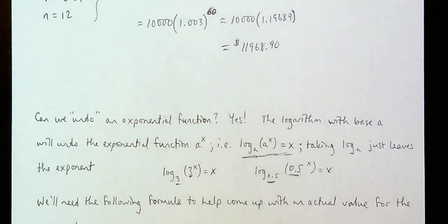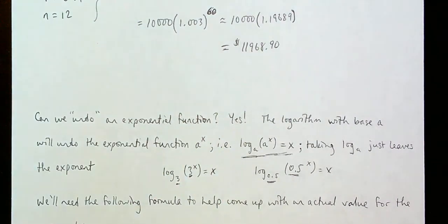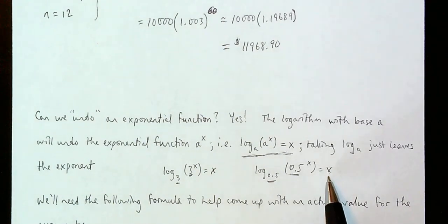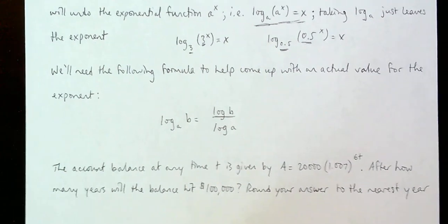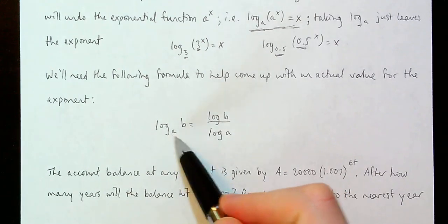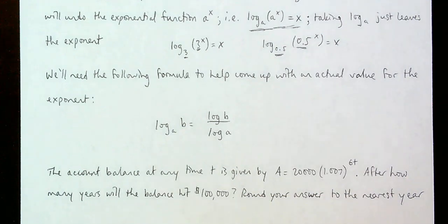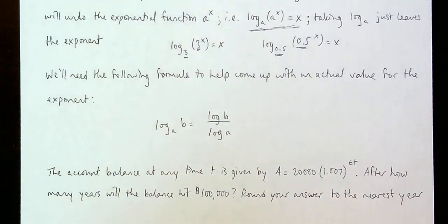That tells us we can undo the exponential. But then we're left with the logarithm of some number, and we need a numerical representation for it. We're going to use the change of base property: log base a of the quantity b is the same thing as log of b divided by log of a. This fact is called the change of base property.